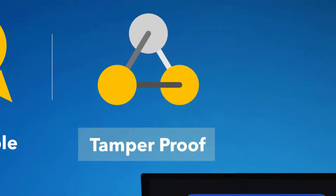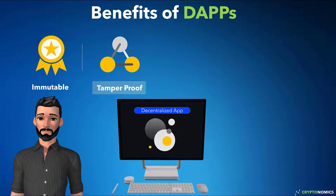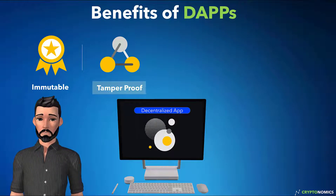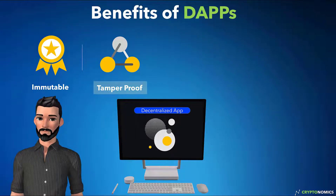DAPs are tamper-proof. Smart contracts published onto the blockchain cannot be tampered with without alerting every other participant on the blockchain.